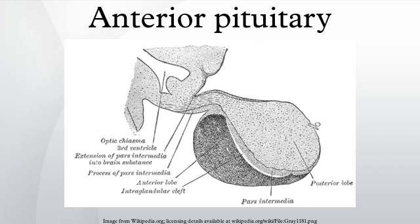History — Etymology: The anterior pituitary is also known as the adenohypophysis, meaning glandular undergrowth, from the Greek adeno, hypo, and physis.